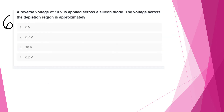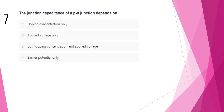A reverse voltage of 10 volts is applied across a silicon diode. The voltage across the depletion region is approximately 10 volts. The junction capacitance of a PN junction depends on both doping concentration and applied voltage.